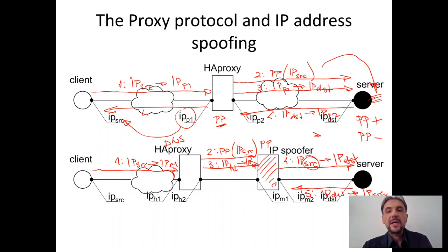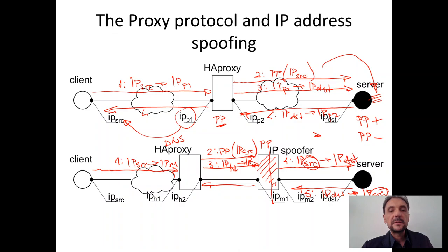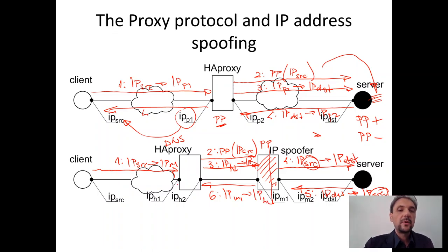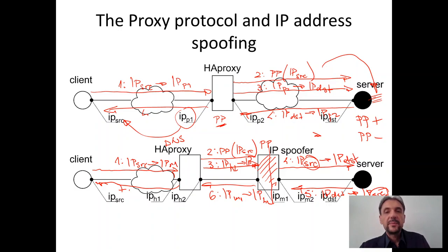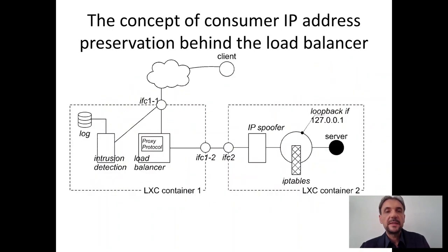The spoofer intercepts the packet, exchanges the destination address, and sends it on its way back, with the IP address of the spoofer as the source, sending it all the way through HAProxy, which forwards it back to the client. In this way, we preserve the source IP address, but the drawback is that we require advanced routing between the server and the IP spoofer.